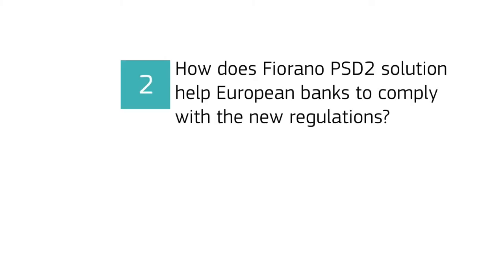From a pure theoretical standpoint at the top level, it's simple enough to describe, but the implementation can be involved. How do you implement PSD2? Fiorano PSD2 is quite a complete solution. To implement PSD2, the bank has to first expose a number of APIs relating to payments, allowing TPPs — third party providers — like a PISP, which is a payment initiation service provider.